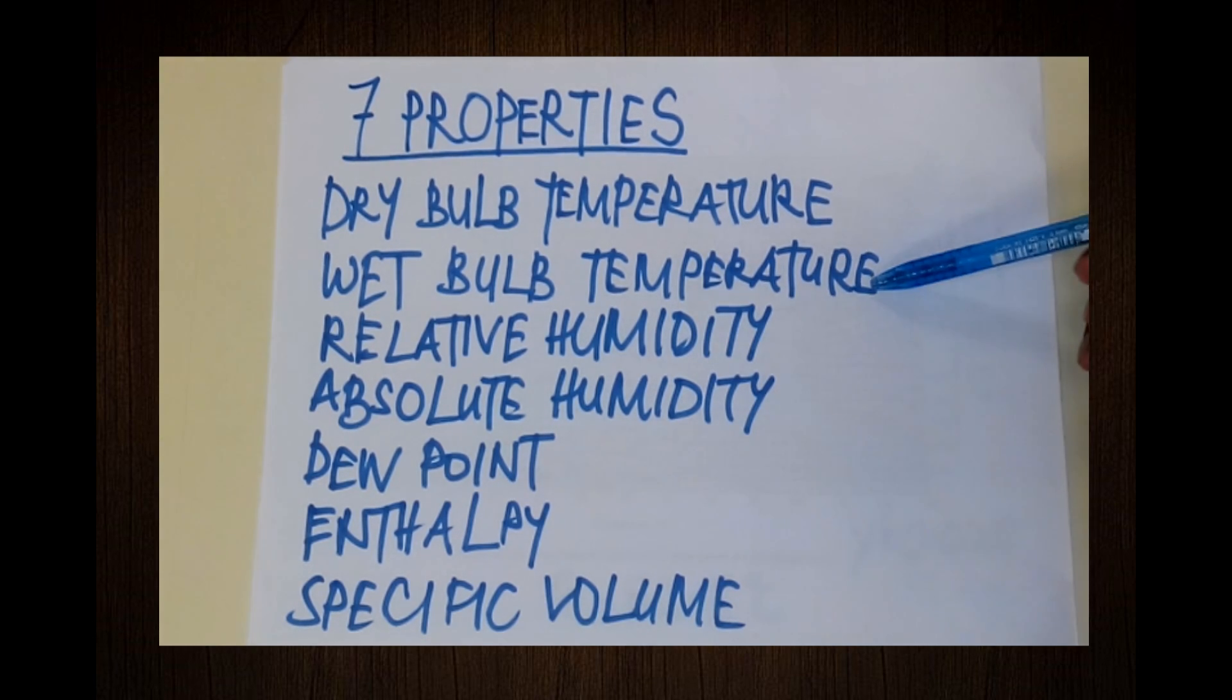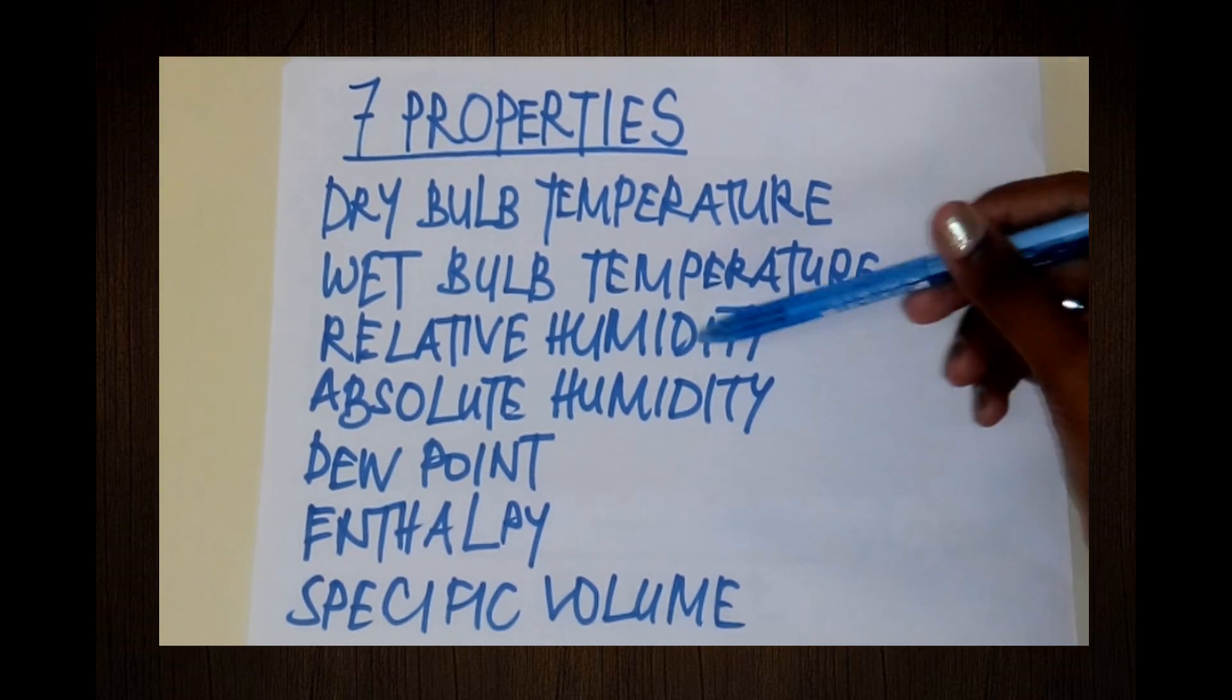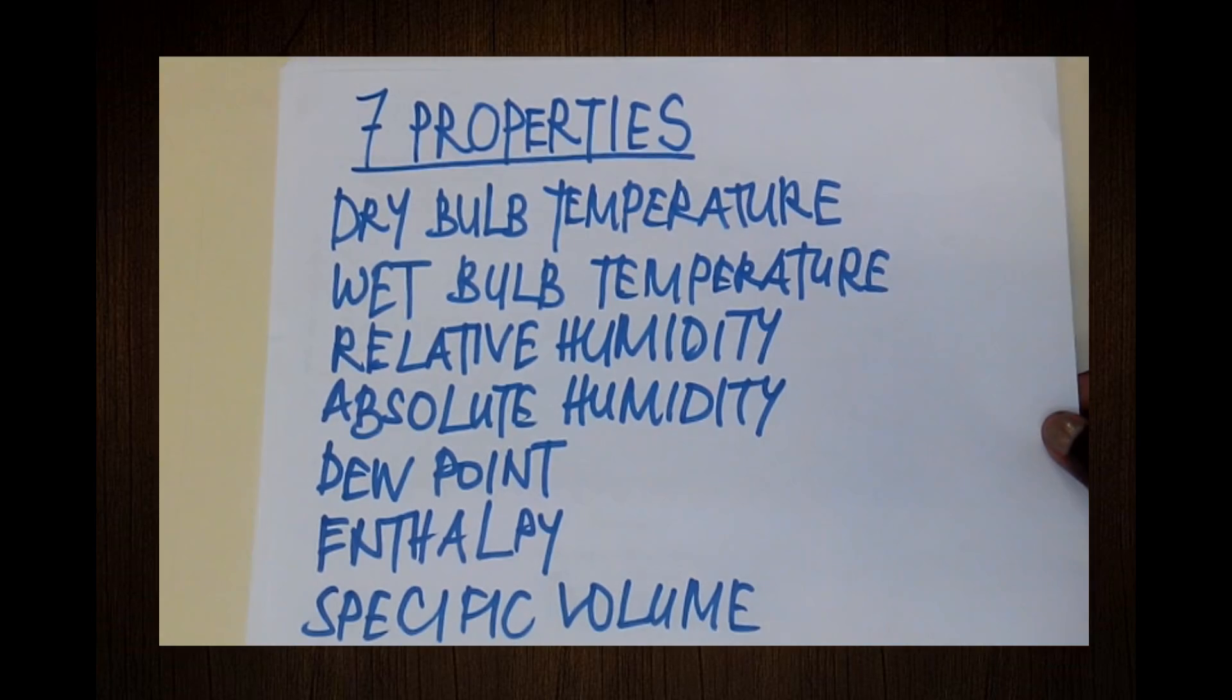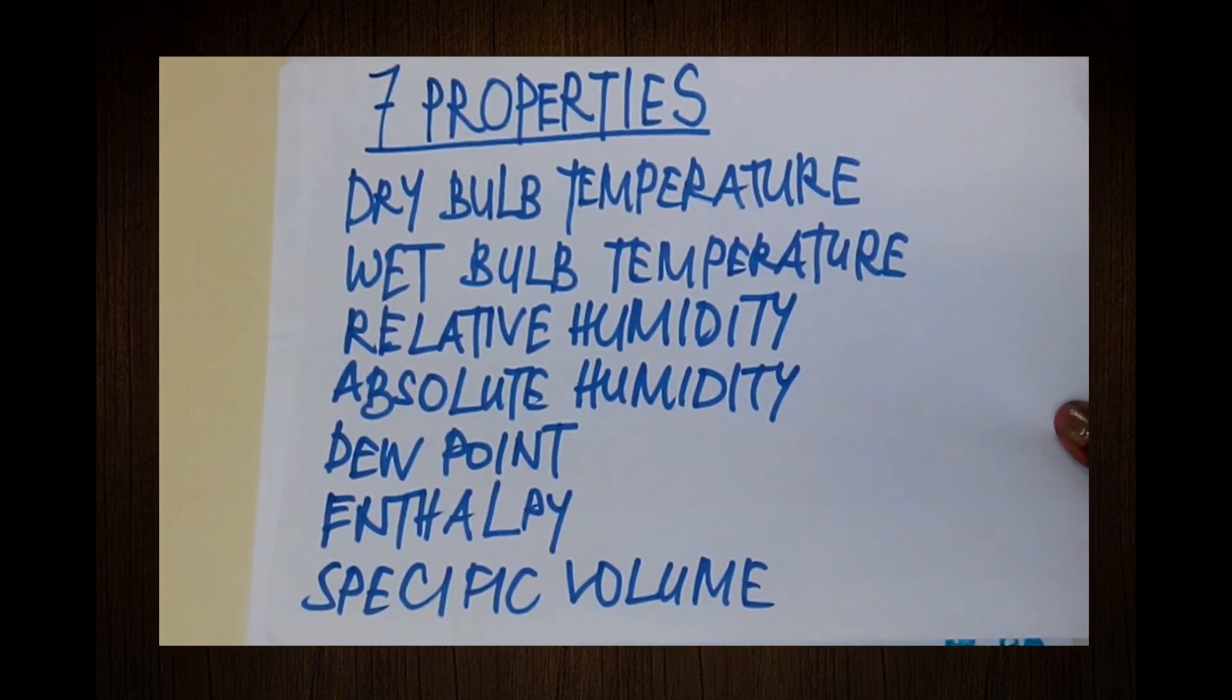These properties are dry bulb temperature, wet bulb temperature, relative humidity, absolute humidity, dew point, enthalpy, and specific volume. In other words, if we have any two of these properties to locate a point, we can easily obtain the other five quantities from the chart.